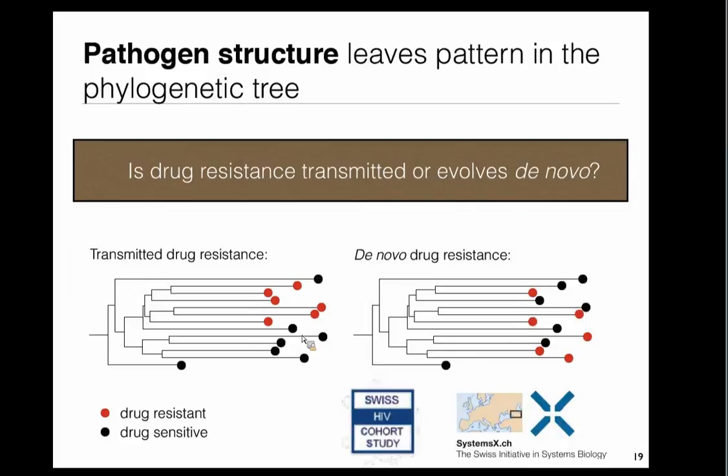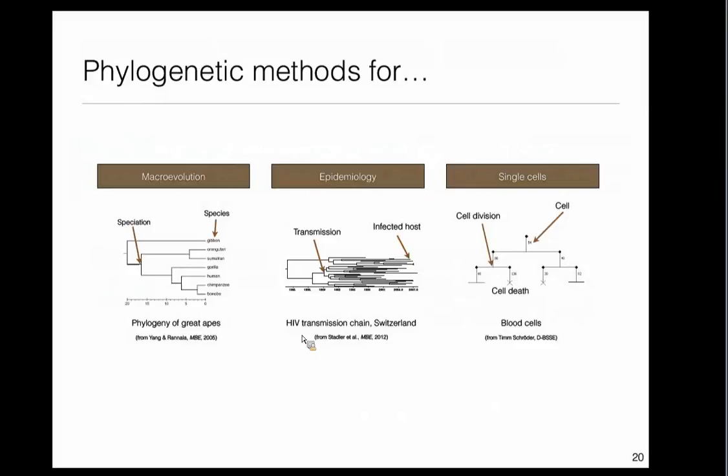This is something we are right now asking, in particular for tuberculosis — a bacterium with many multi-drug resistant strains — where we get data from Georgia, and also looking into HIV, in particular the Swiss HIV cohort. With this overview of epidemiology, I want to briefly show what we also do in the two other areas: macroevolution and single cells.